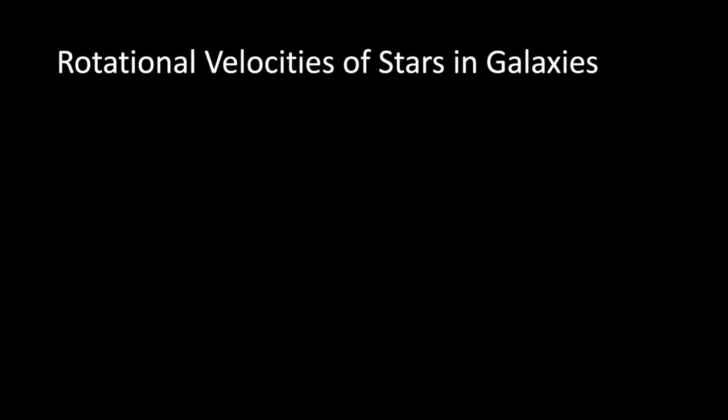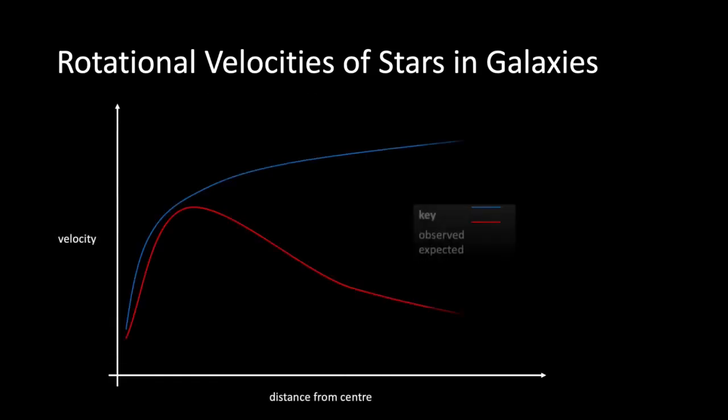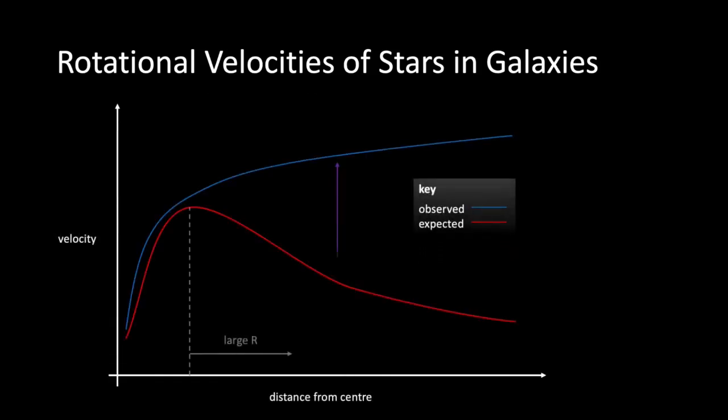Now, plotting this on a graph and comparing it with the observed results, we can see that there is a discrepancy between them. This implies that the actual mass of the galaxy must be much greater than the observed mass. So where is this extra mass coming from? Scientists concluded that the extra mass of the galaxies must be contributed by dark matter.